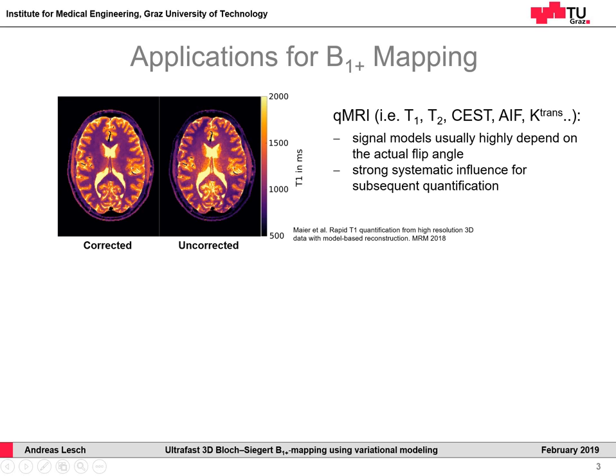Here you can see a sample T1 map gained with the method of variable flip angle. In the uncorrected case you can see that there is a huge inhomogeneity in the central part of the brain. But this effect can be easily corrected by measuring the B1 field distribution and incorporating it into the model.